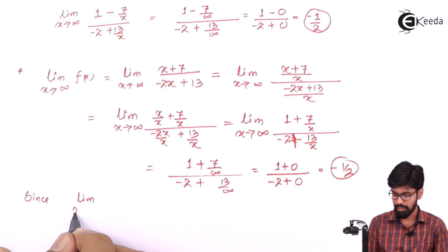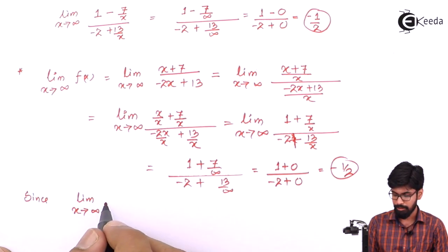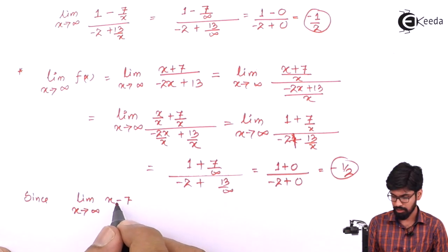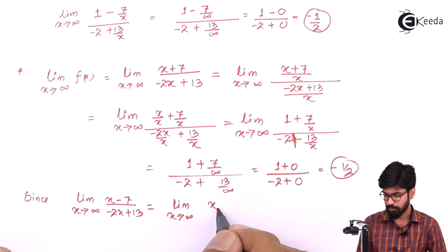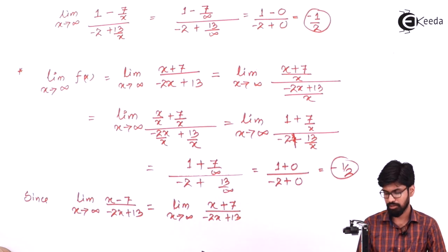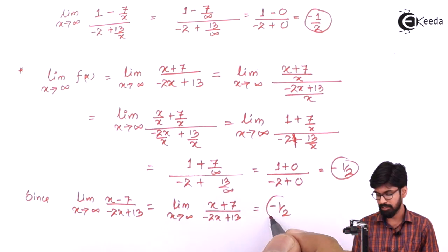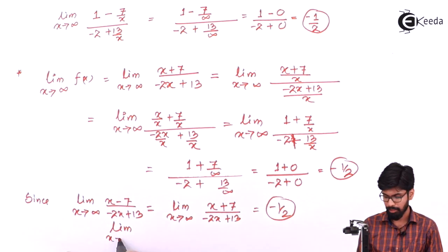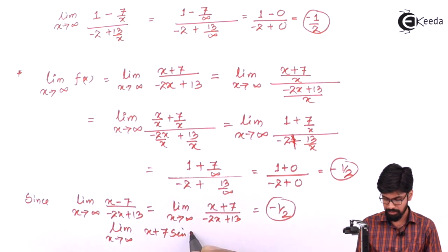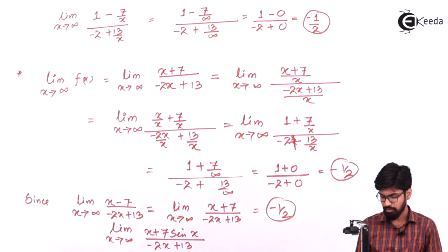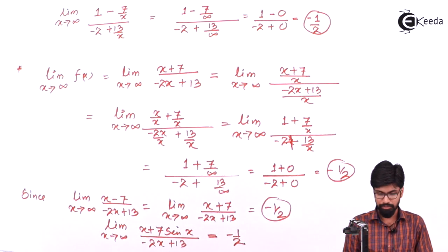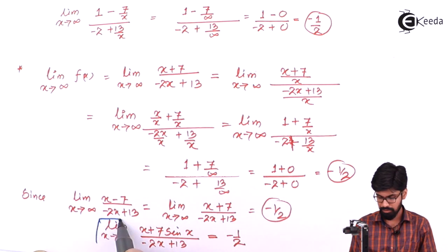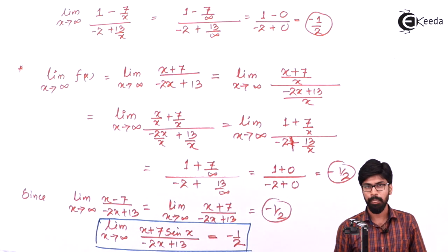Since the limit as x → ∞ of both bounding functions f(x) = (x + 7) / (-2x + 13) and h(x) = (x - 7) / (-2x + 13) equals -1/2, by the Sandwich Theorem the limit of g(x) = (x + 7 sin x) / (-2x + 13) as x approaches infinity is also -1/2, which is our final answer. This is the limit of the given function using the Sandwich Theorem.